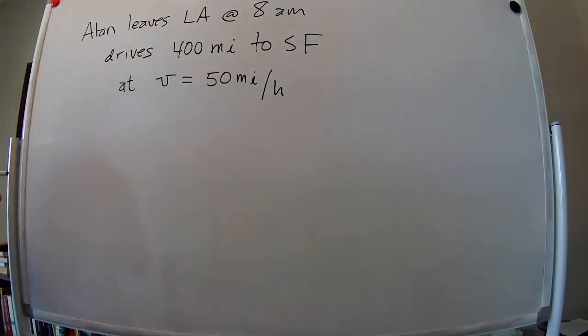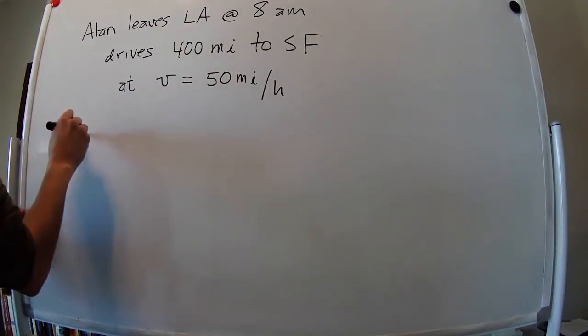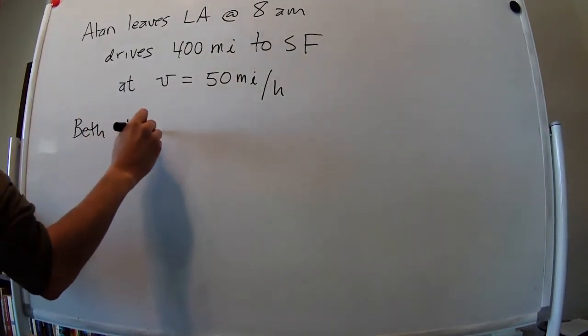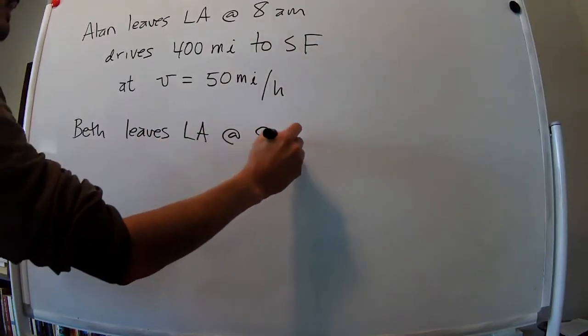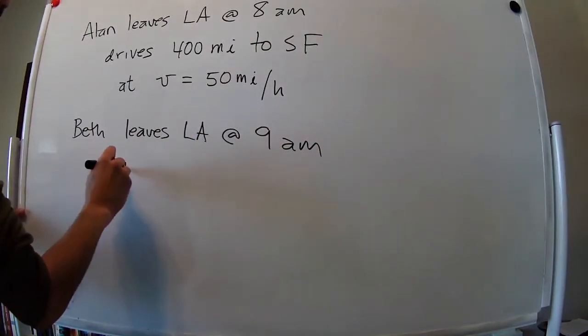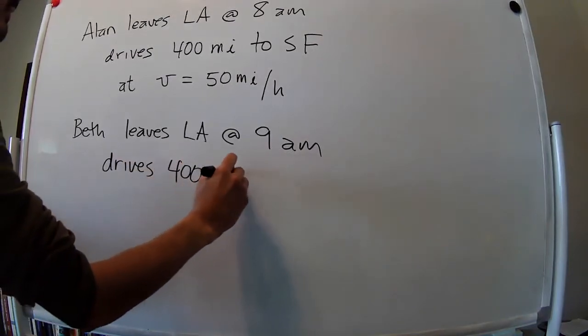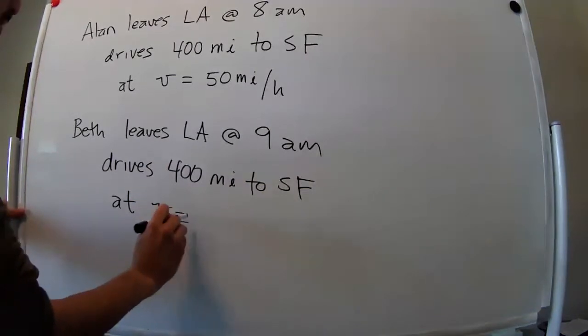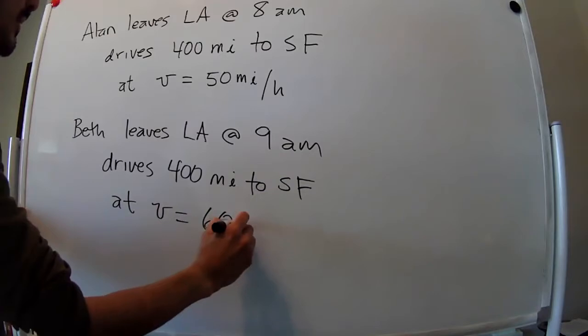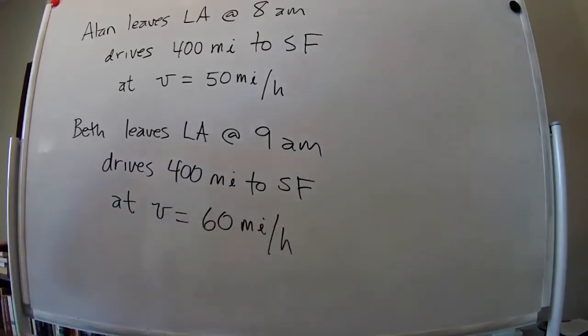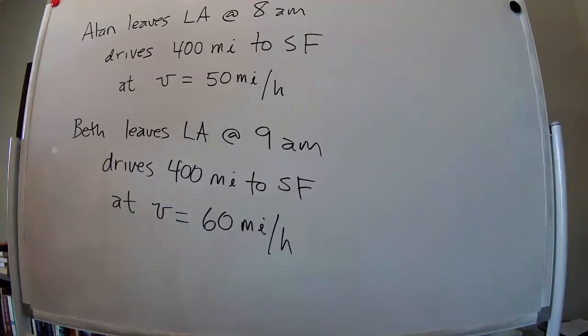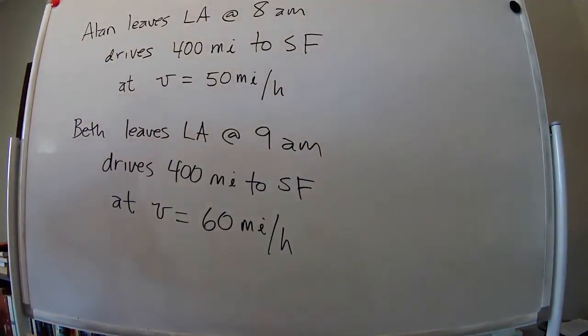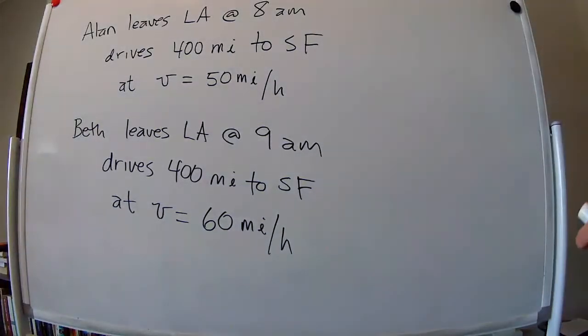And we have the same information about Beth. So she leaves LA at 9am, drives the same distance to San Francisco, and she's going a little bit faster. Her velocity, her speed is 60 miles per hour. Okay, so the first thing that we have to determine is at what time they are going to arrive to San Francisco. Reminds me of a song, anyways.